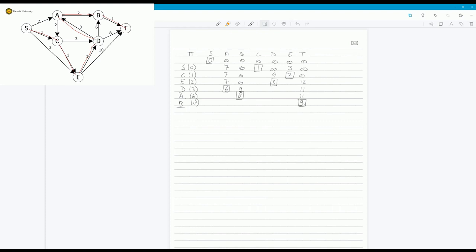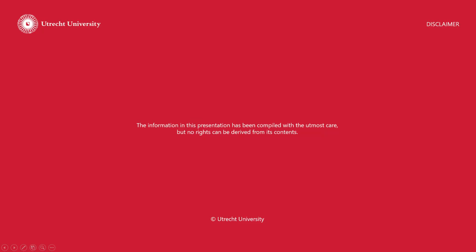Hence, the shortest path is from S to C, to E, to D, to A, to B, and to T. This concludes the example of Dijkstra's algorithm. Good luck with the exercises.